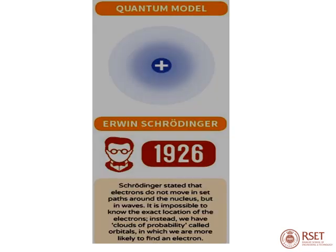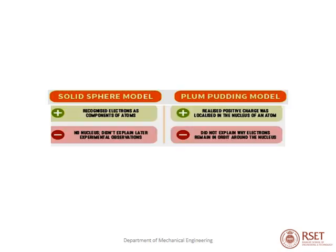In the quantum model, Erwin Schrödinger in 1926 stated that electrons do not move in set paths around the nucleus but in orbitals. It is impossible to know the exact location of the electrons. Instead, we have clouds of probability called orbitals in which we are more likely to find an electron — a probability rather than a fixed orbit.